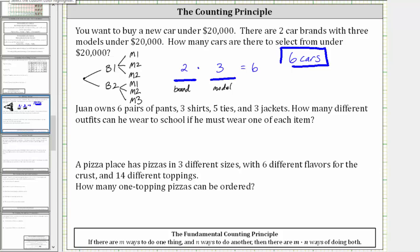So Juan must do four things. He must select a pair of pants, a shirt, a tie, and a jacket.